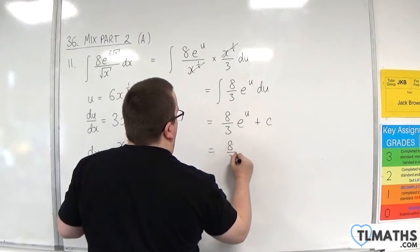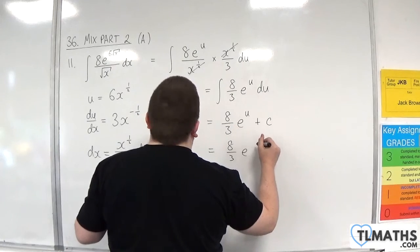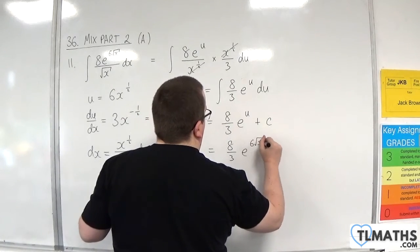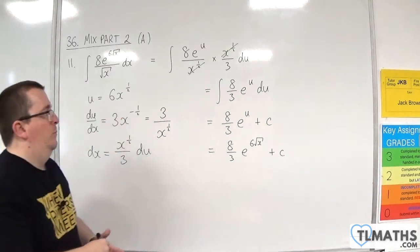And then pop the substitution back in. So e to the 6 root x, plus c. And we're done.